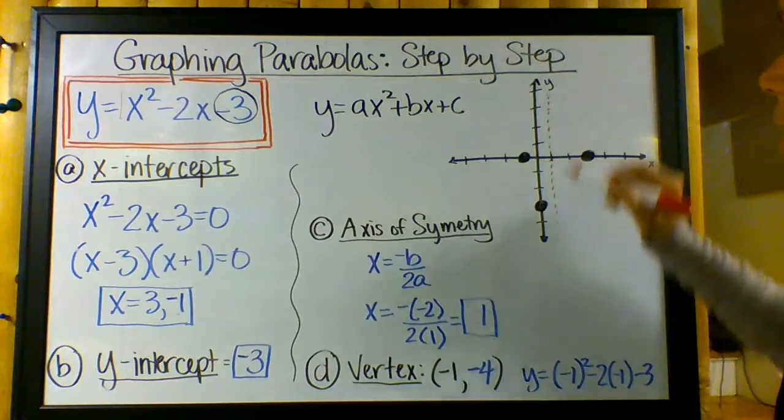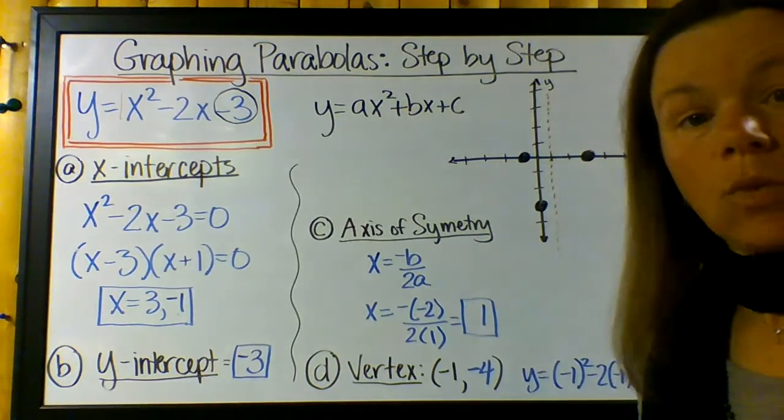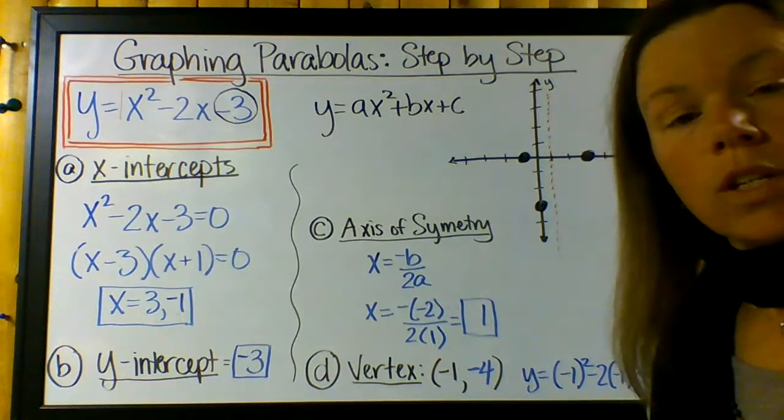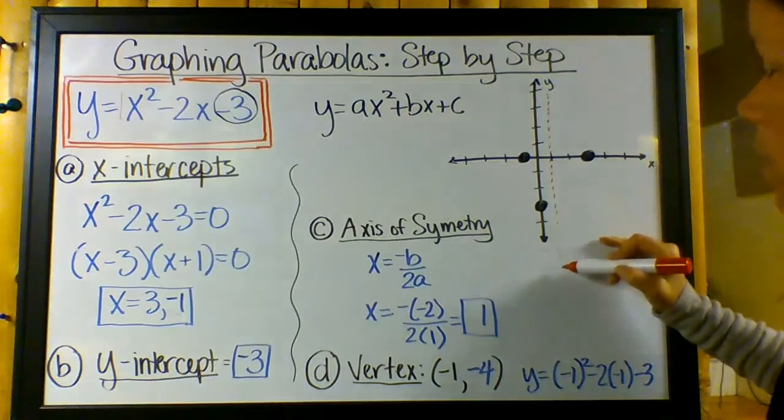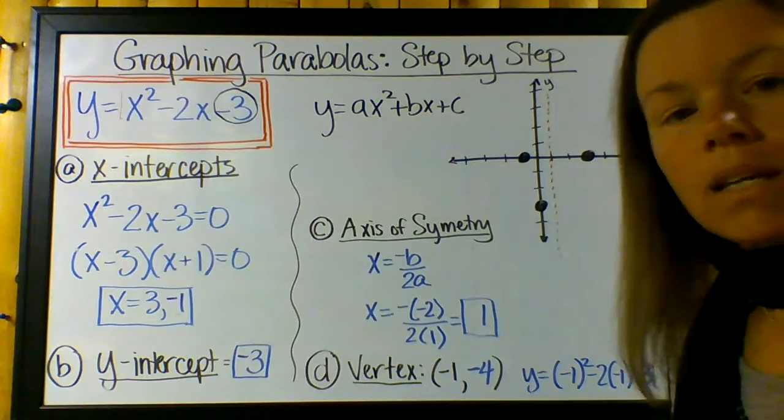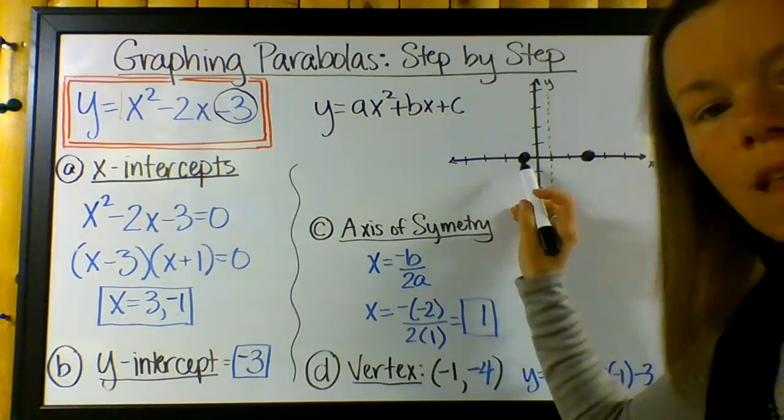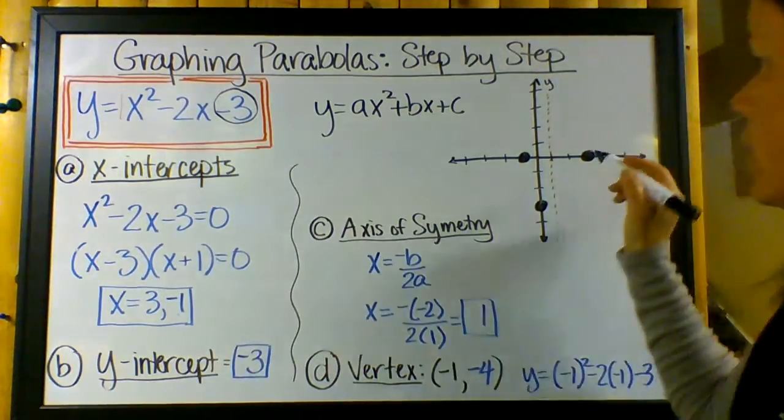So this is the equation. Remember we did that vertical line thing with an equation: x equals. So an x equals equation is a vertical line. So this is x equals positive 1. And so I make my axis of symmetry. That means that every point on the left of this line has a partner point to the right of that line. Okay? So let's see.